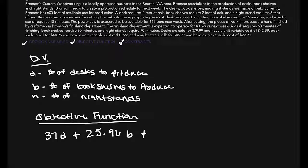And last but not least, the nightstand sells for $49.99 and costs $29.99, leaving us with $20 profit for the nightstand N. So, our objective function is 37D plus $25.96B plus $20N.